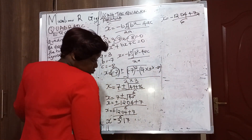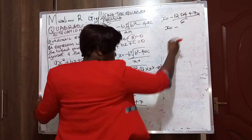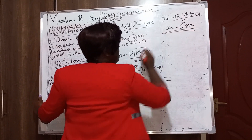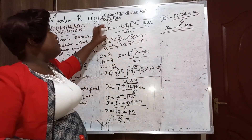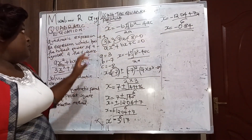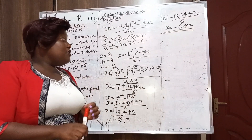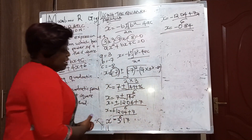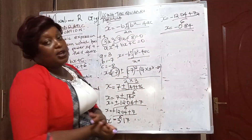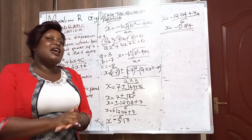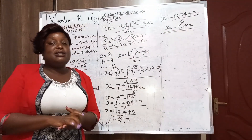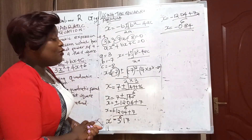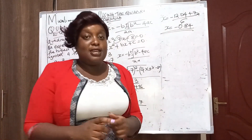That gives us x equals negative 0.84. So we have two values of x: x equals 3.1 and x equals negative 0.84. We have identified a, b, and c and applied the quadratic formula. Please subscribe, like, share, and comment below. Thank you for watching.